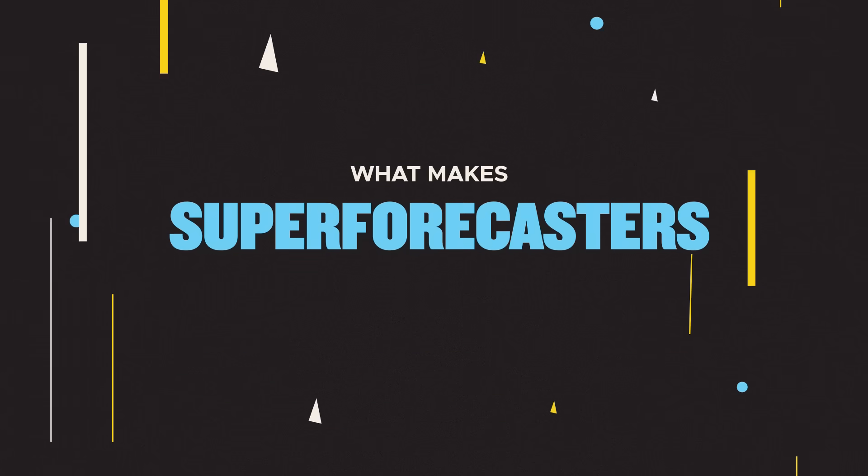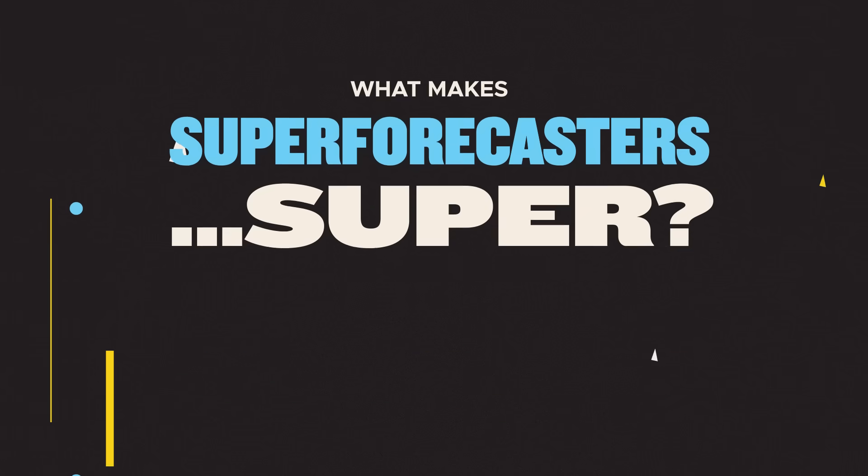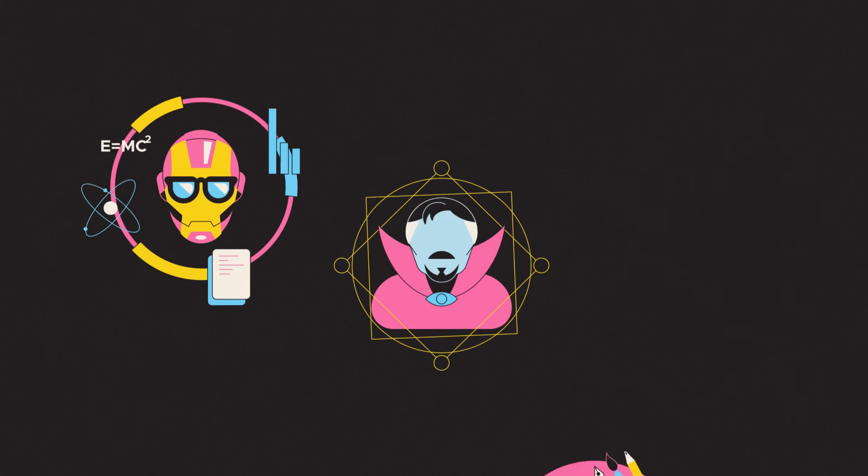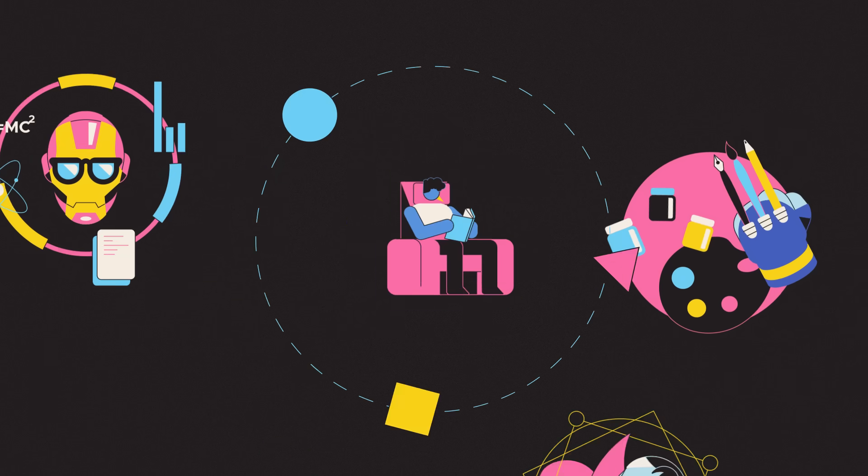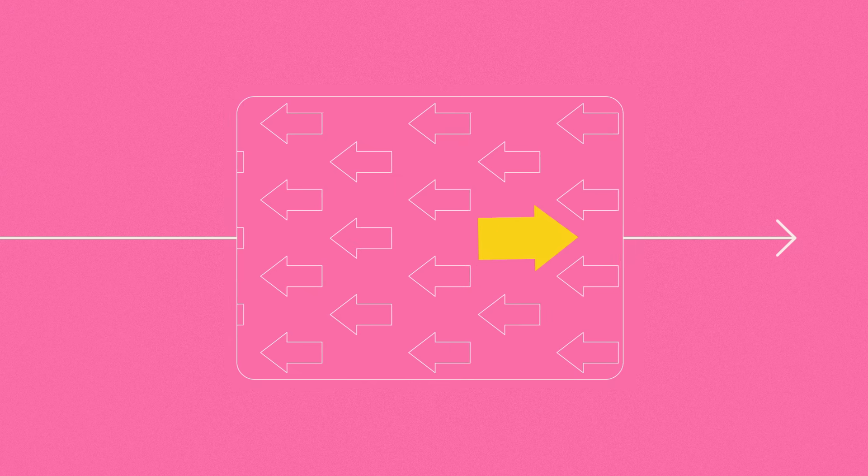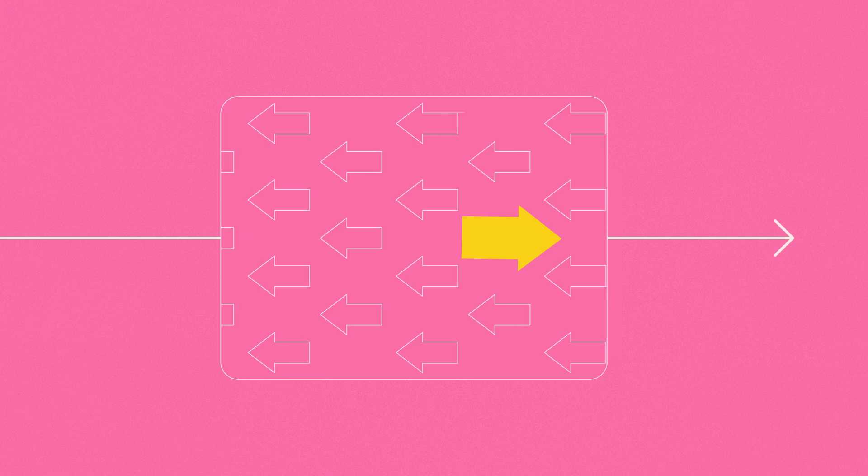So what makes Superforecasters super? You might think genius-level intelligence, statistical wizardry, or a wild imagination. But Tetlock insists that really it's just down to simple mental habits, ones that go against how people usually think about the future.